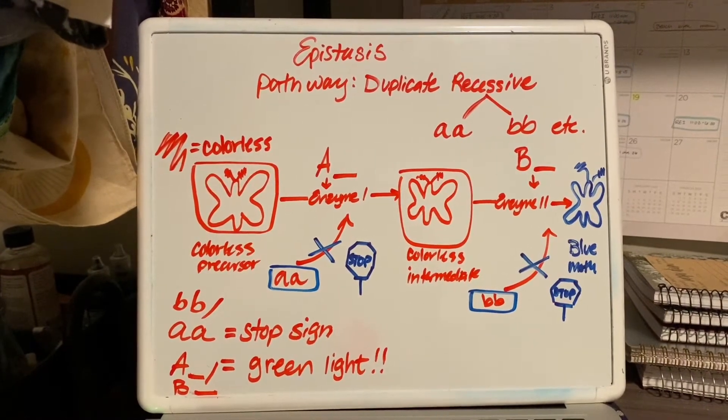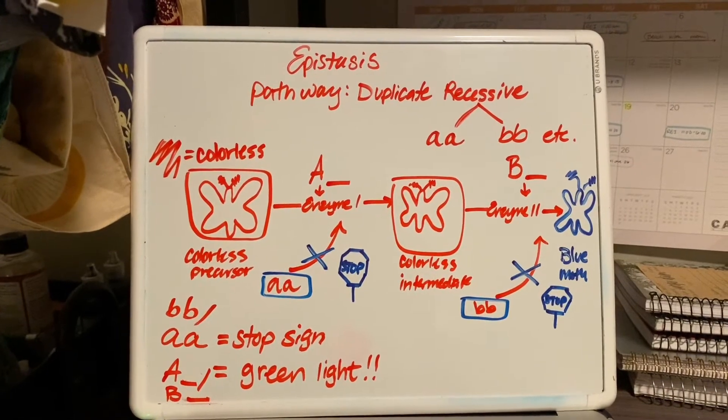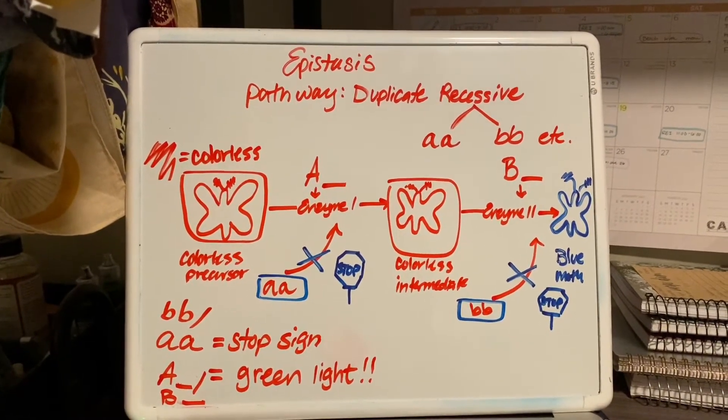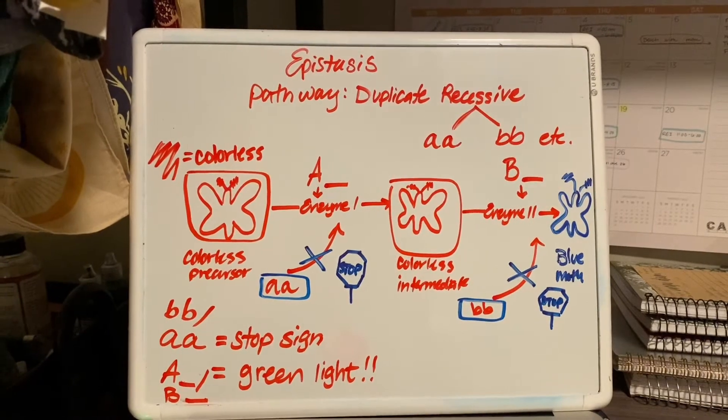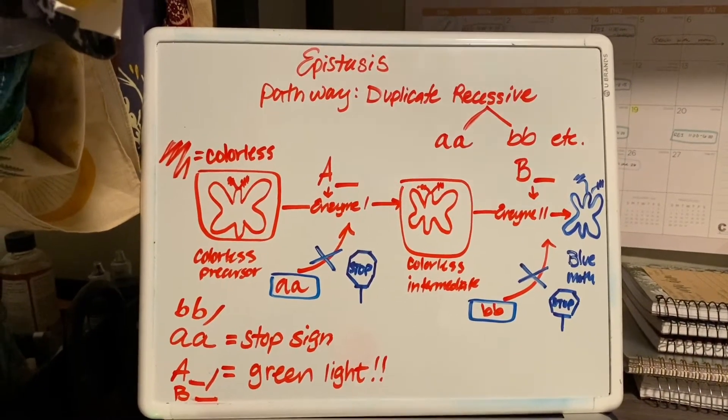The duplicate recessive, little a little a, acts kind of like a stop sign inhibiting that enzyme, so it can't move forward. So if you were to have little a little a, everything would stop there.